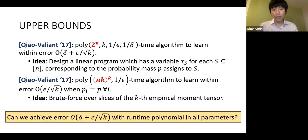A basic question is: can I achieve this information theoretically optimal error, up to constants, in time and samples polynomial in all parameters?